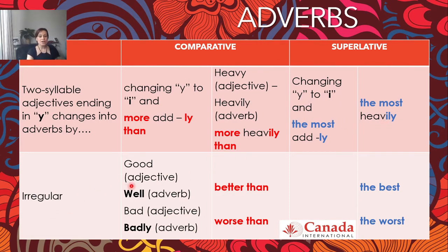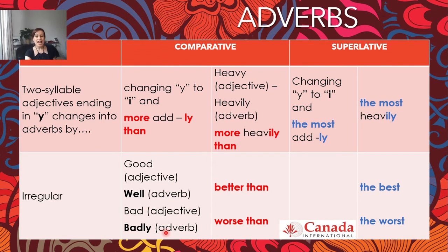And then irregular forms. Good is the adjective, however well is the adverb. The comparative is going to be better than — like the one used for the adjective — and the superlative is the best. And then we have bad as an adjective; badly is going to be the adverb. However, the comparative is going to be worse than, and the superlative is the worst. So here are some highlights of how we can make comparative and superlative adverbs. I hope that you have learned a little bit about that — see you on the next video. Bye-bye, take care.